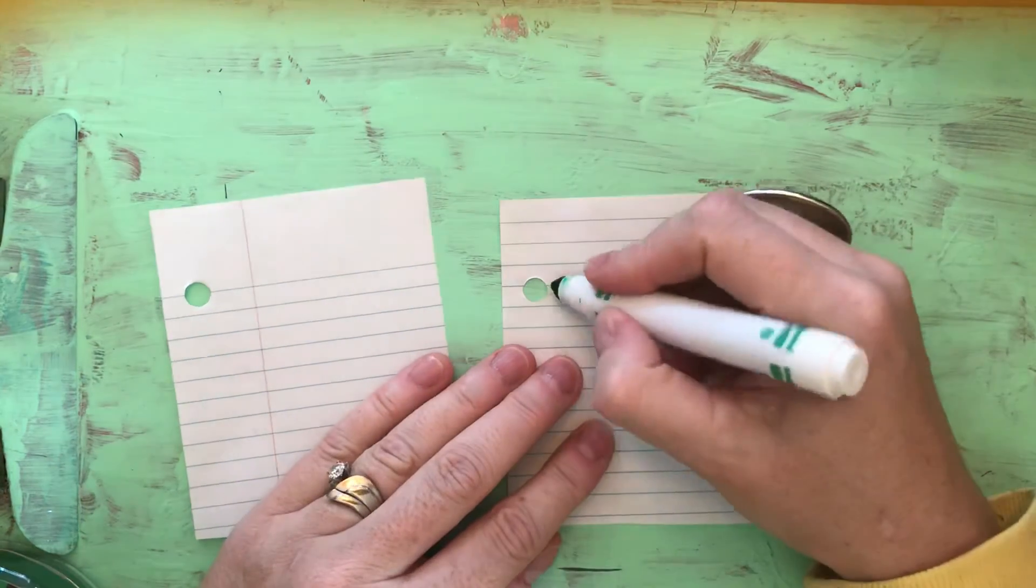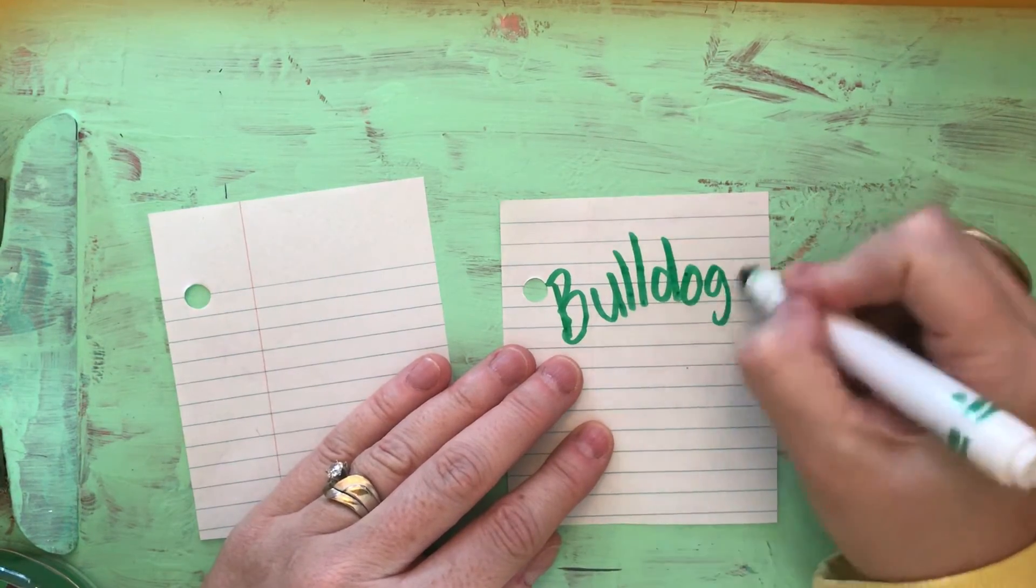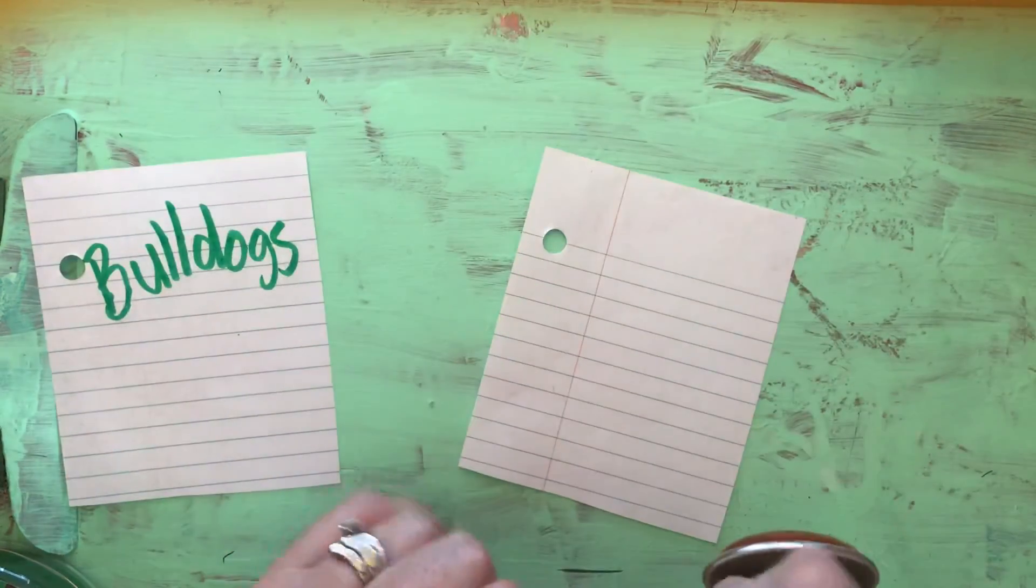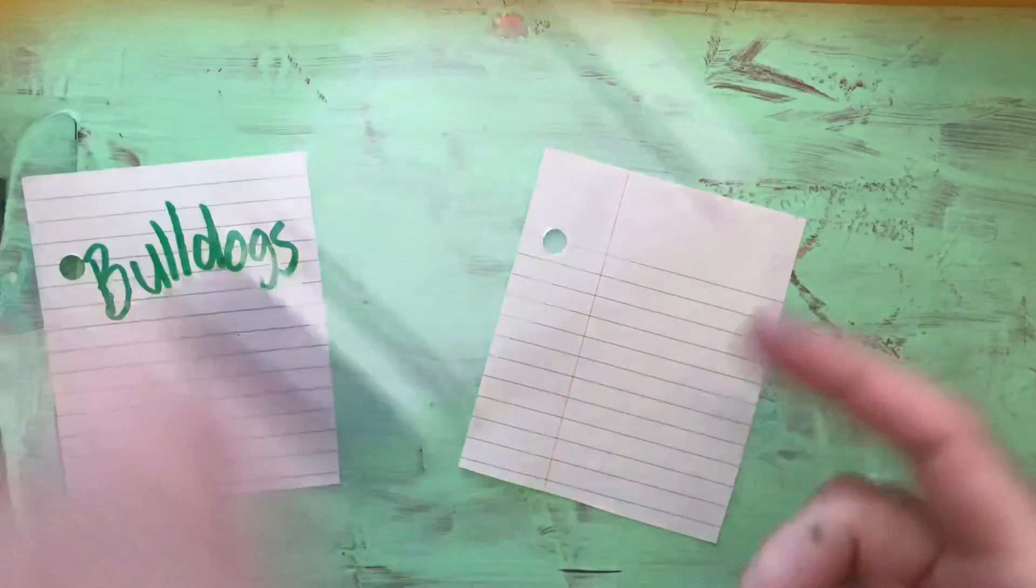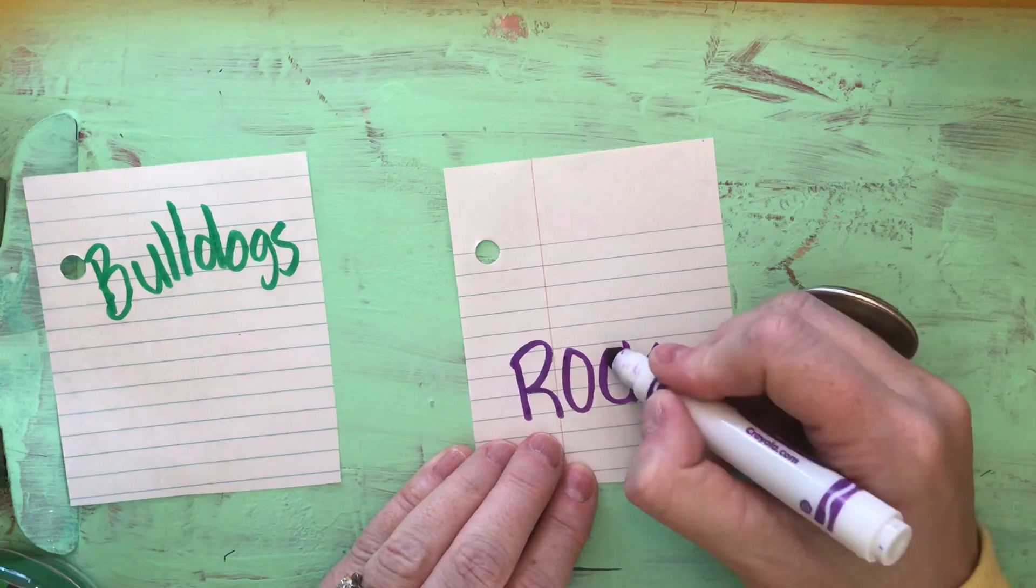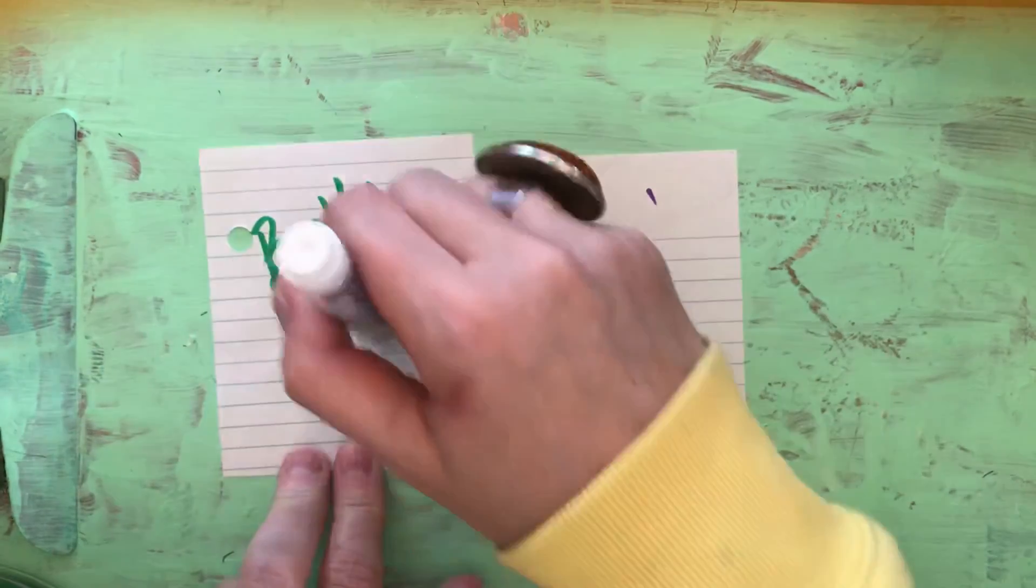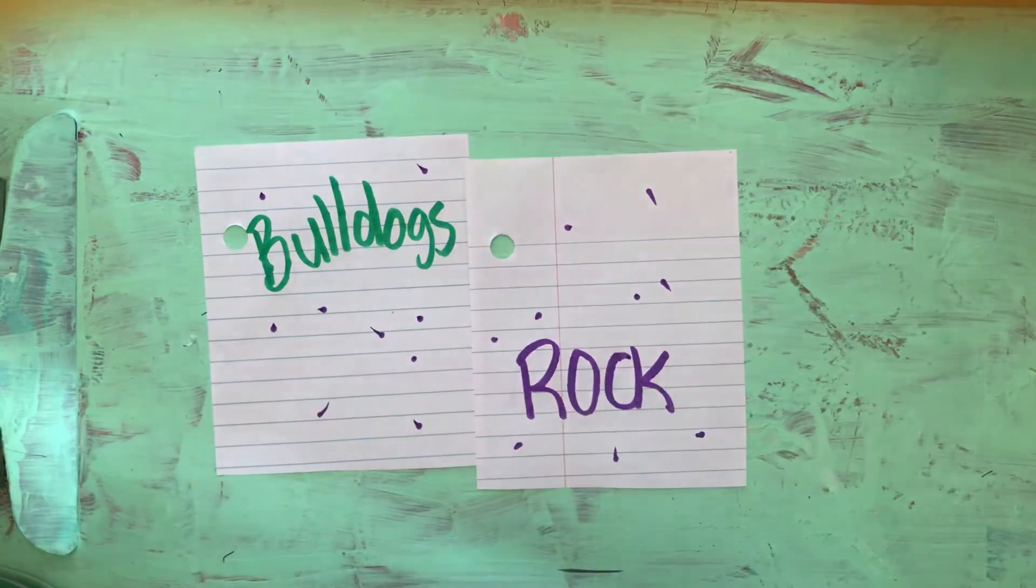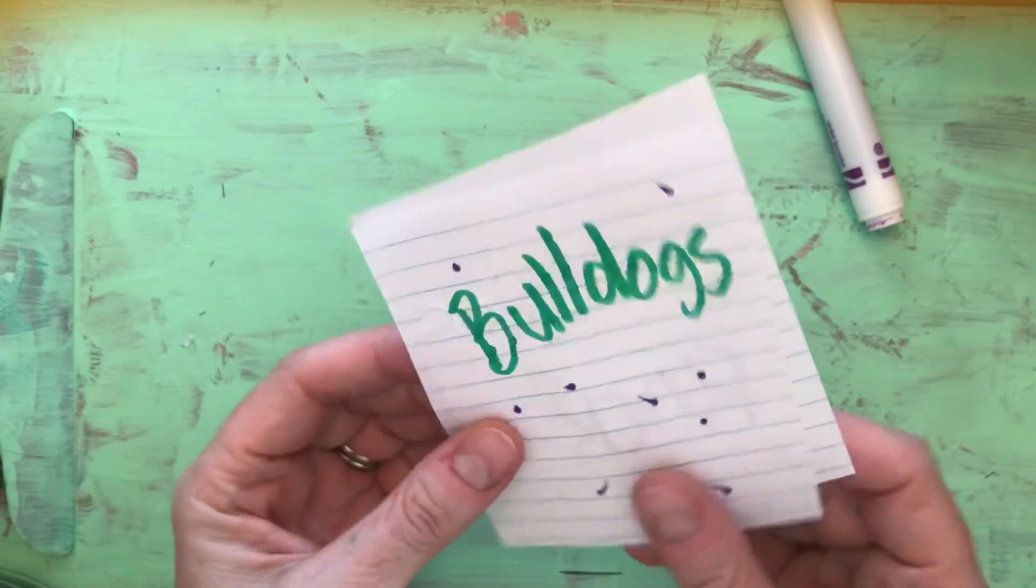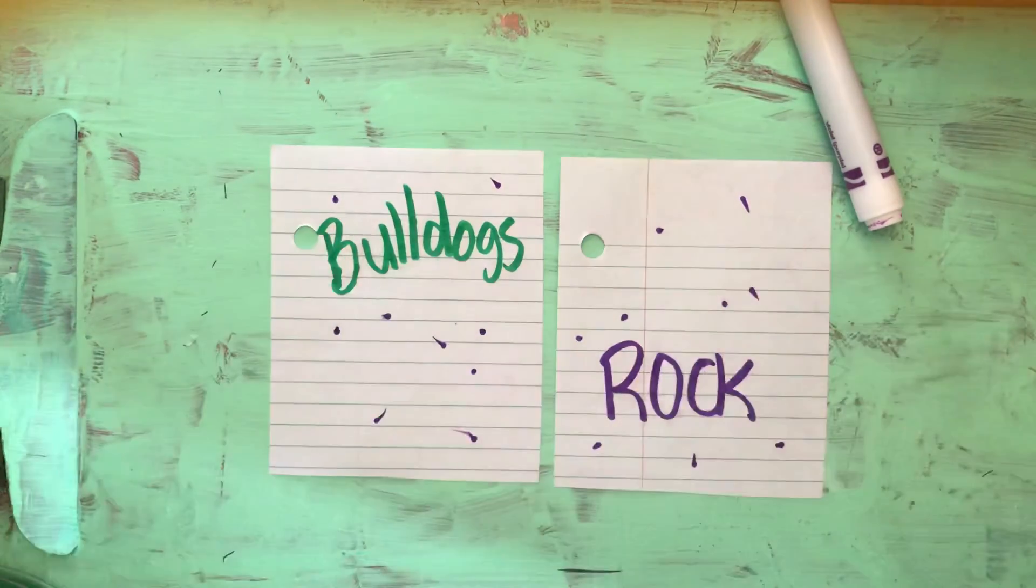If you want to start with something that might be a little bit easier, then just do two words - 'Bulldogs' and then on this one 'Rock'. You might decorate, and then when you've attached it, it will become one sentence.